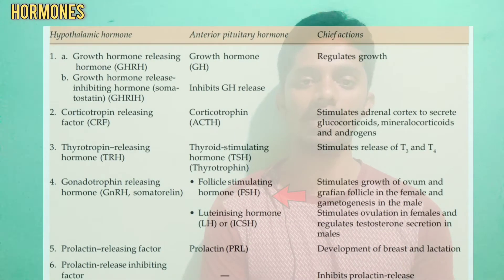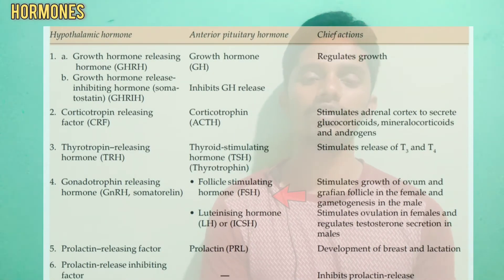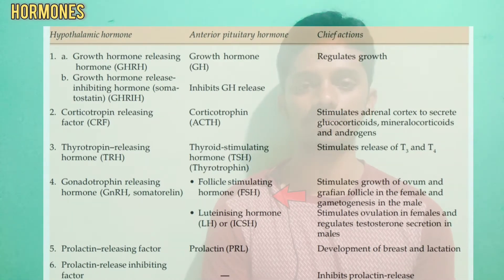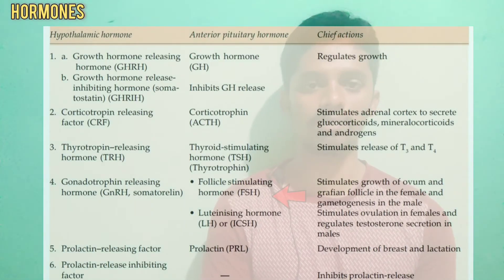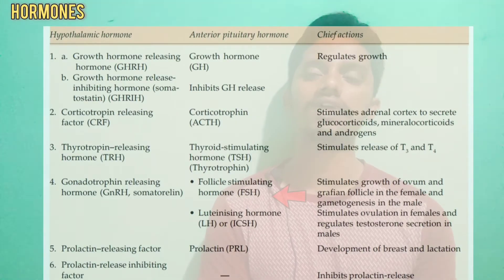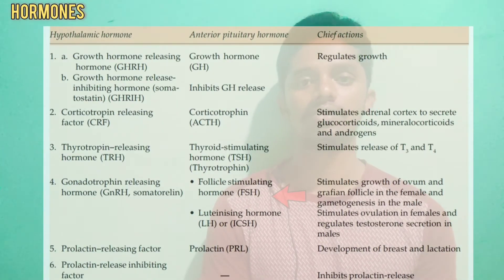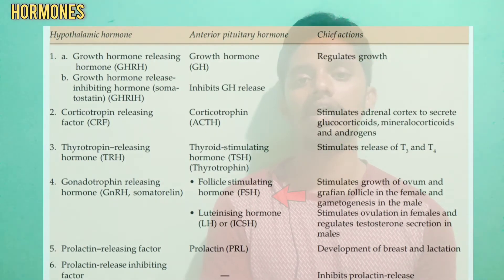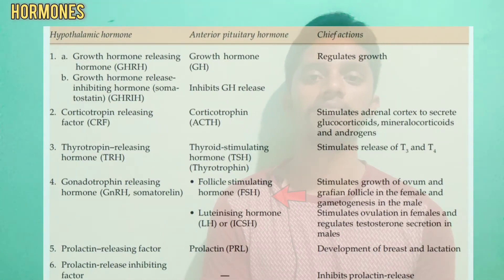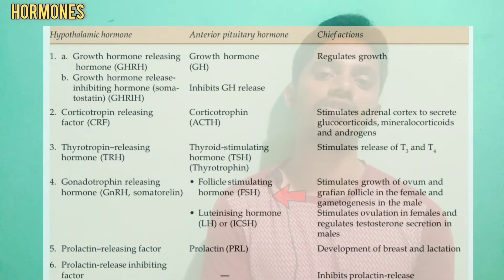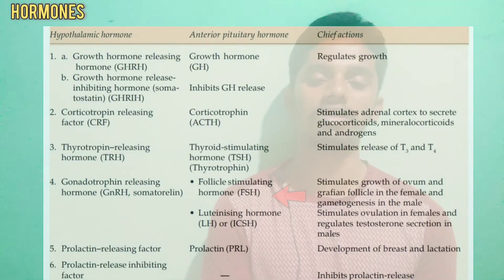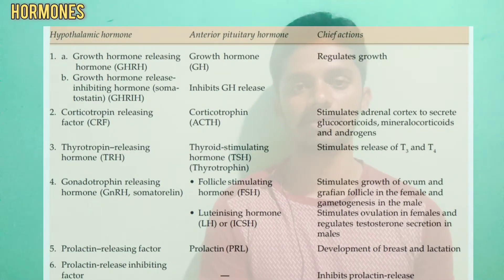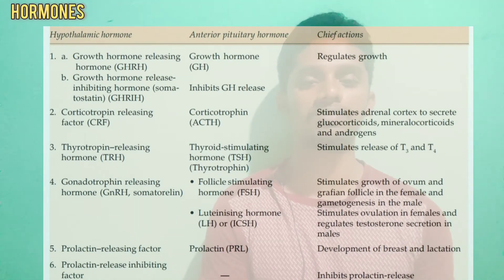The next hormones are the two gonadotropins: Follicle Stimulating Hormone and Luteinizing Hormone, also called sex hormones. FSH helps with follicle development and growth of the ovum in females, and increases sperm production through gametogenesis in males. Luteinizing Hormone stimulates testosterone production in males and ovulation in females.